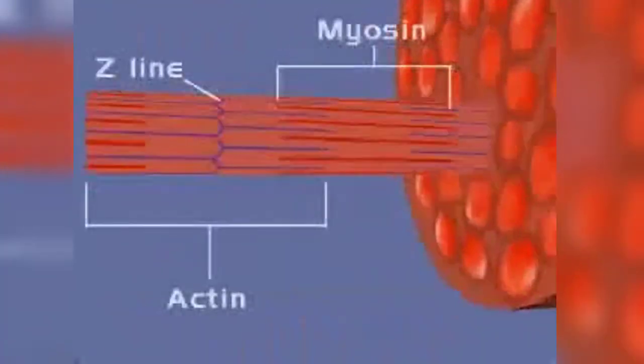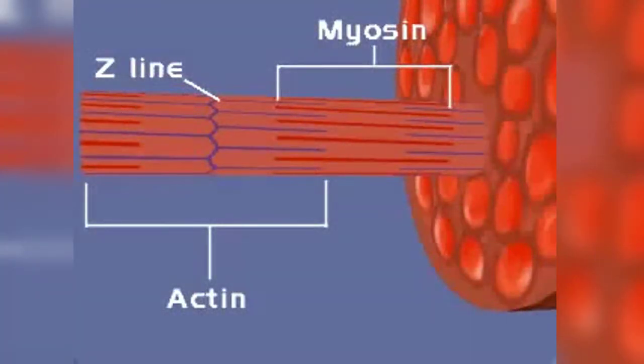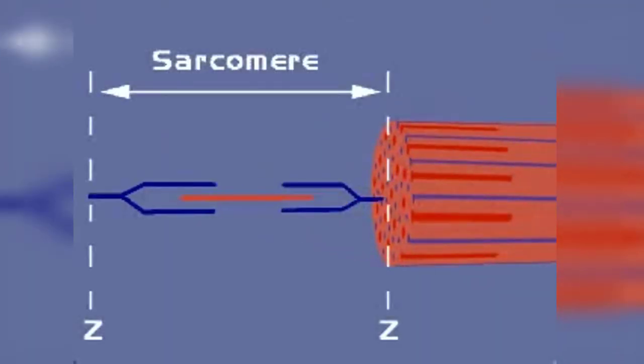The two types of myofilaments: thick myofilaments shown in red are composed primarily of the protein myosin, and thin myofilaments shown in blue composed mainly of the protein actin. The repeating arrangement of thick and thin myofilaments serves as the fundamental subunit of striated muscle contraction.